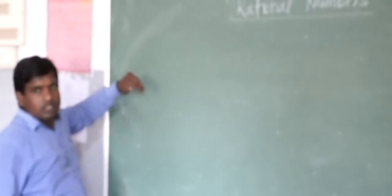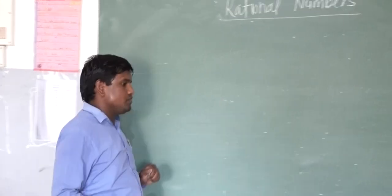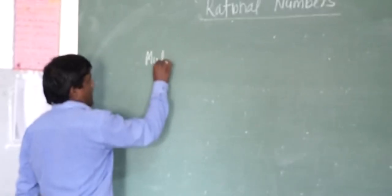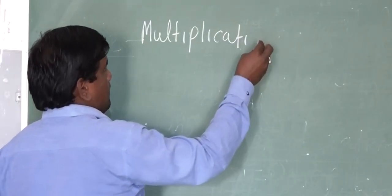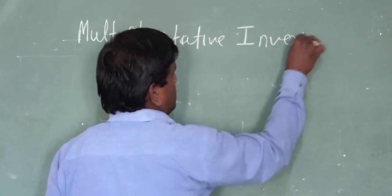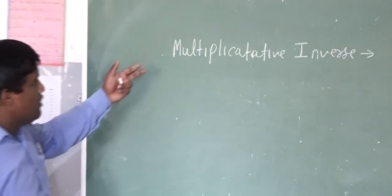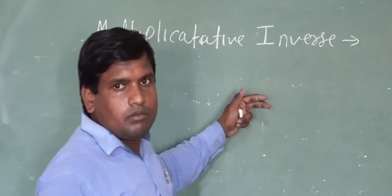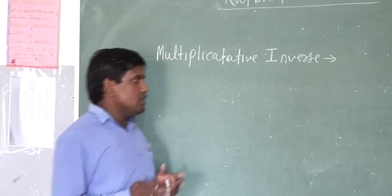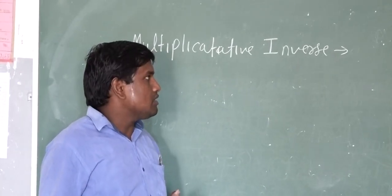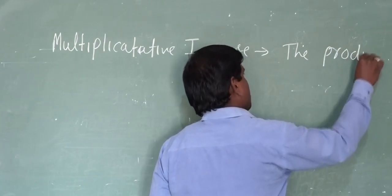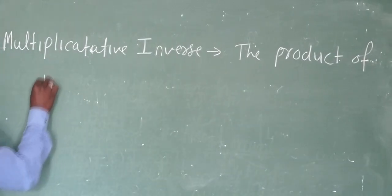These are some properties used in Exercise 1.1, such as multiplicative inverse. We have studied this property in previous classes. The definition of multiplicative inverse is: the product of two rational numbers is 1. Those two numbers are called multiplicative inverses of each other.